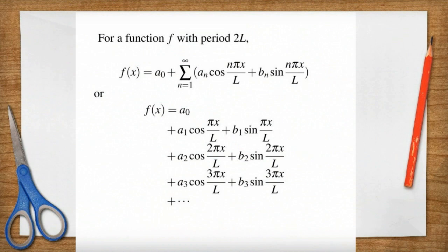A Fourier series for a function f with period 2L, and that just means that the function repeats every 2L, has this form. That's the Fourier series. Or if you don't like the summation notation, you can see here it's an infinite series of sine and cos functions.